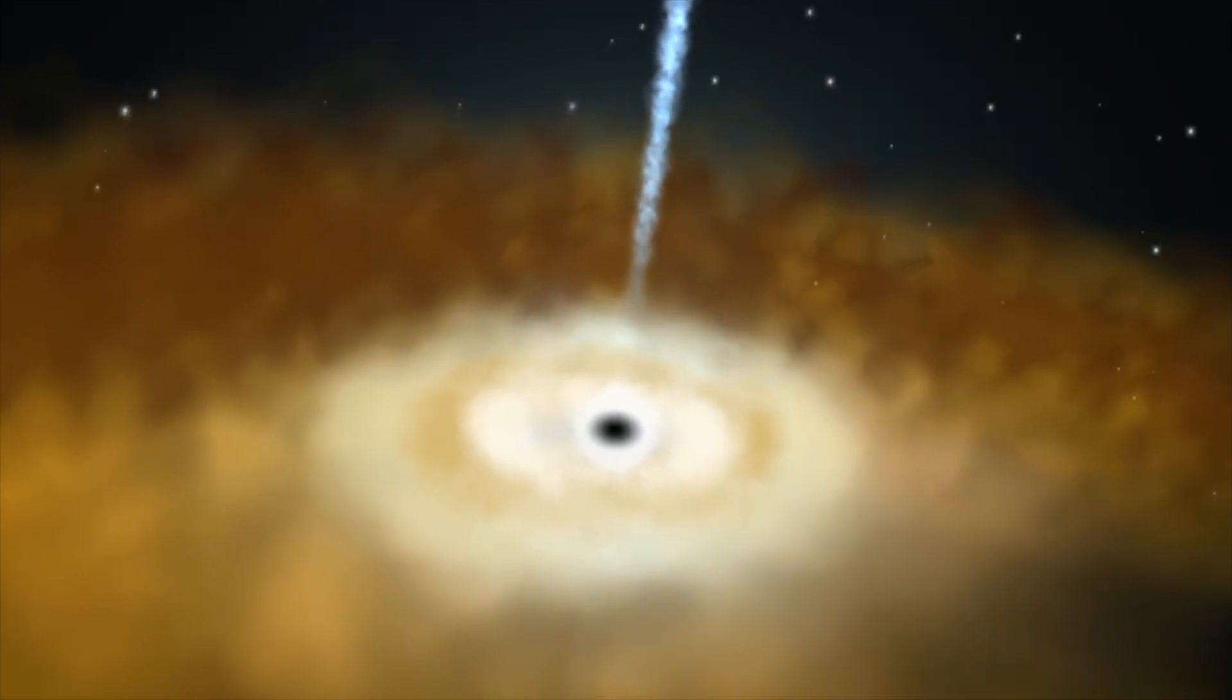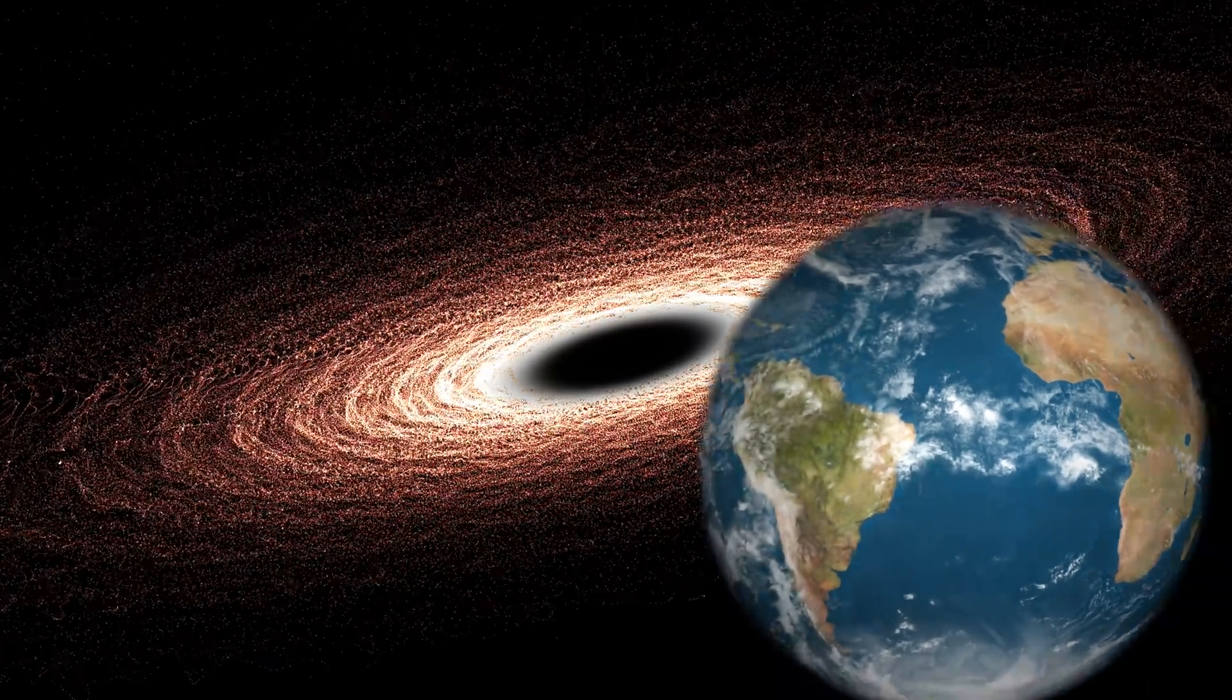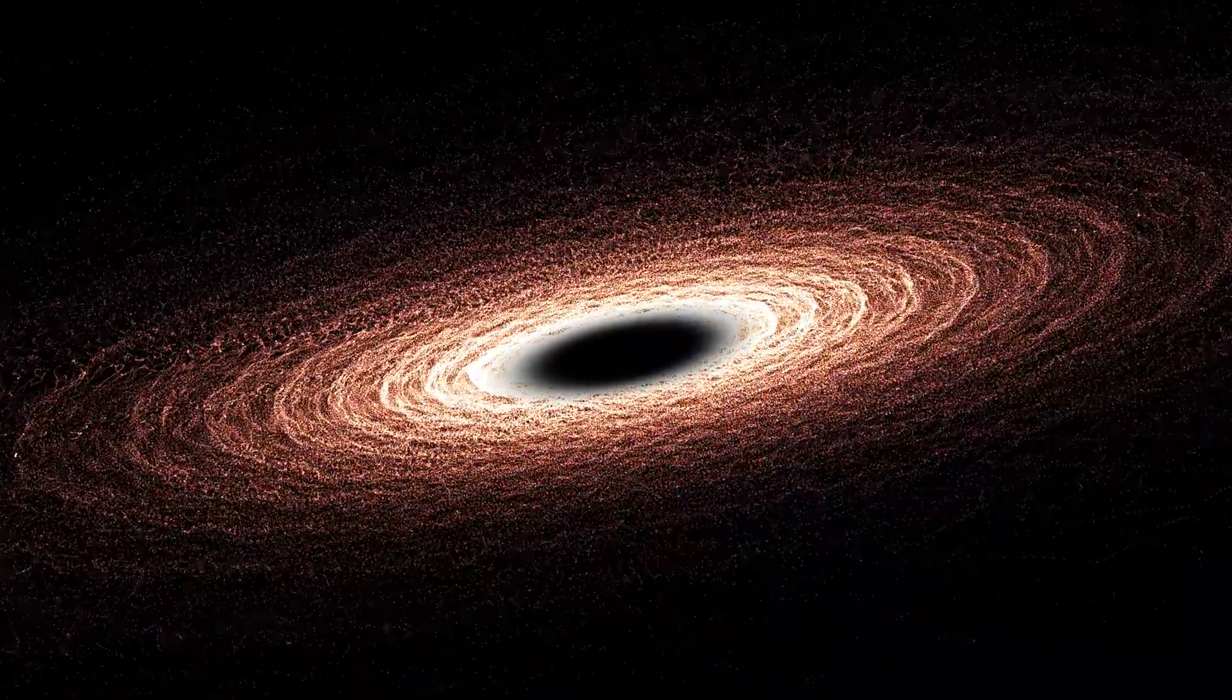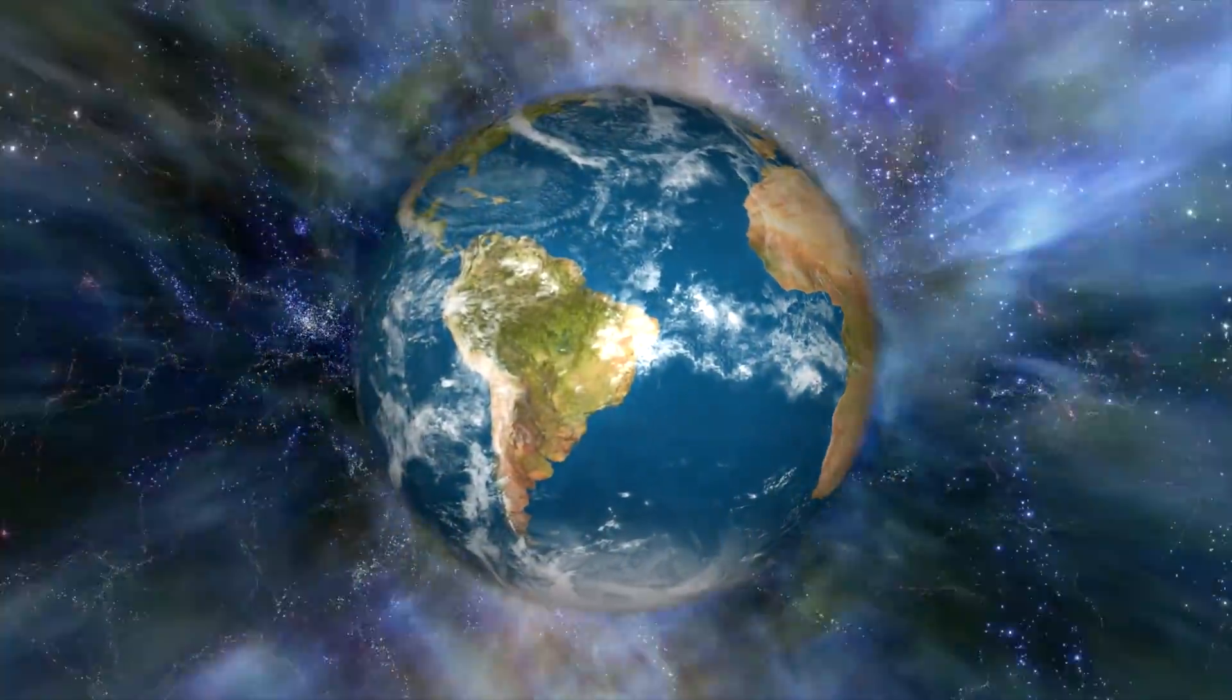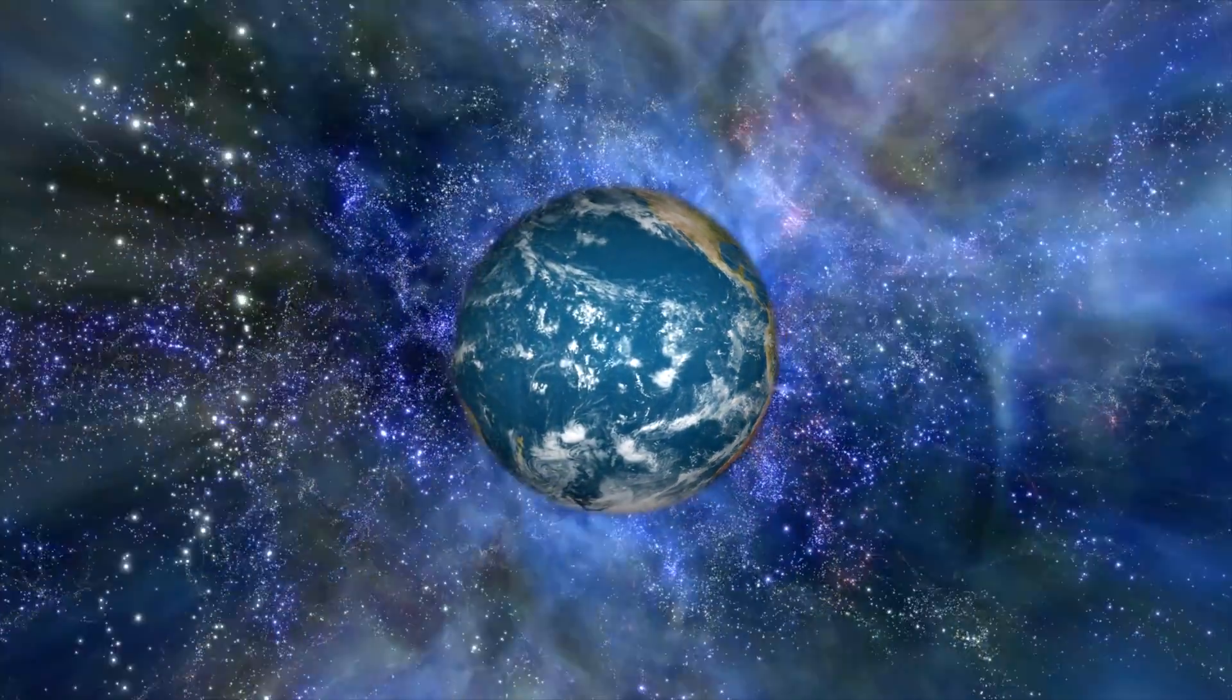In our universe there are thousands of black holes, but the scary part is we can't see most of them. This means if a black hole appeared in our orbit, it would be very bad. Earth could be swallowed up, or space could be moved around so much that Earth would be thrown into a void.